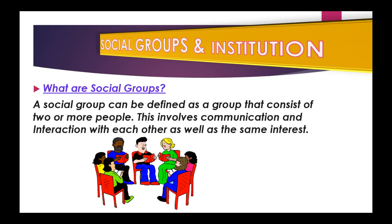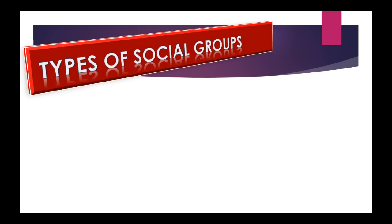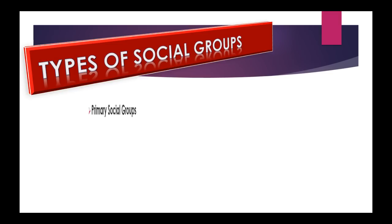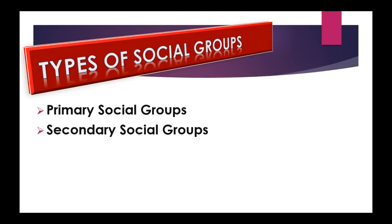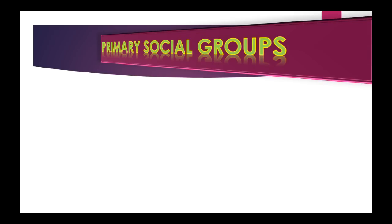Now we're going to go into the types of social groups. The types of social groups include: first, primary social groups; second, secondary social groups; and third, formal and informal groups. We'll be looking at each of these in detail.